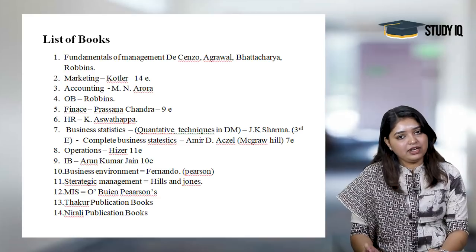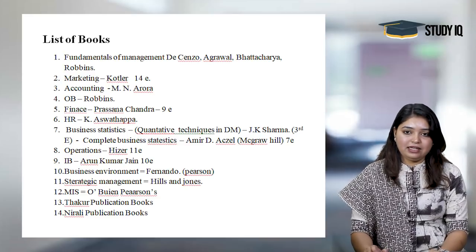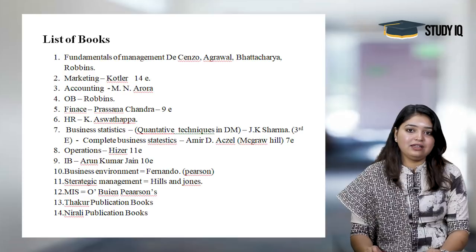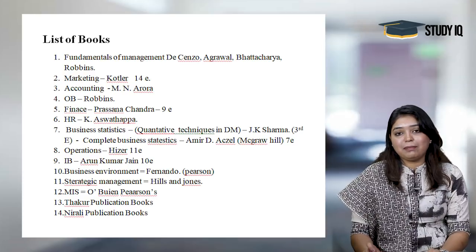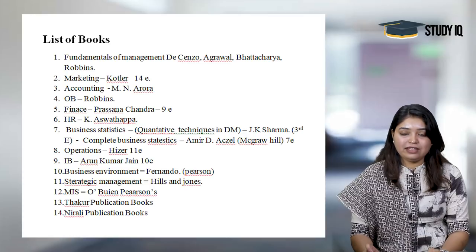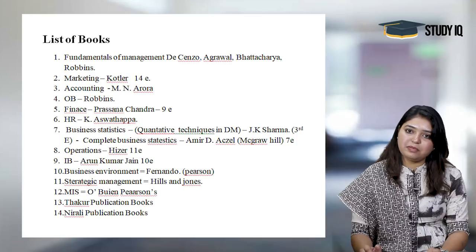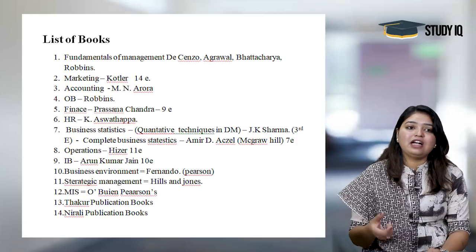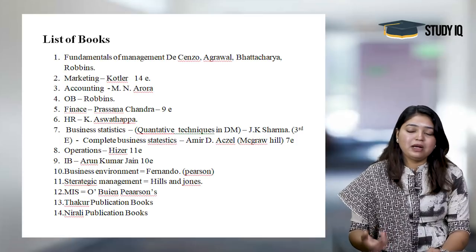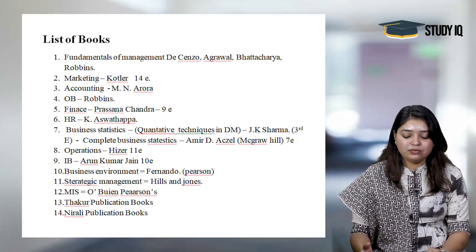For the Marketing paper, the Bible of marketing is Philip Kotler's 14th edition. It covers all basic concepts and is a very colorful and interesting book to refer to. For the Accounting paper, we can refer to M.N. Aurora.